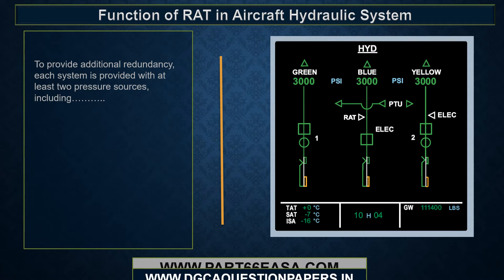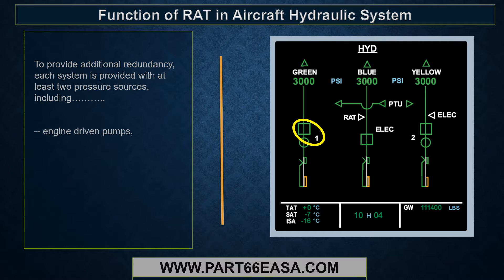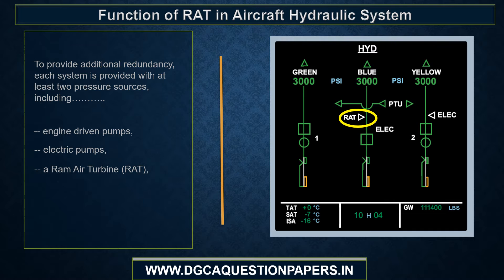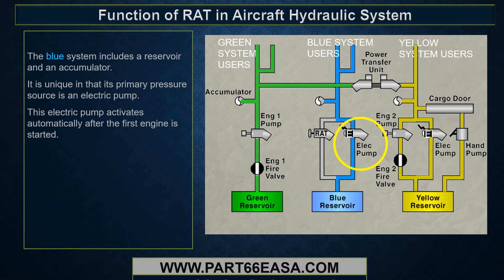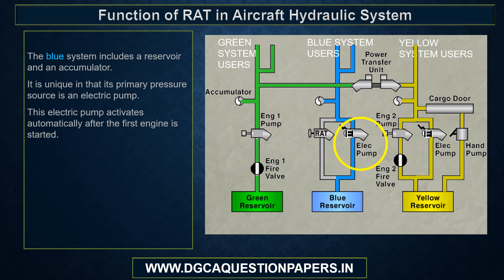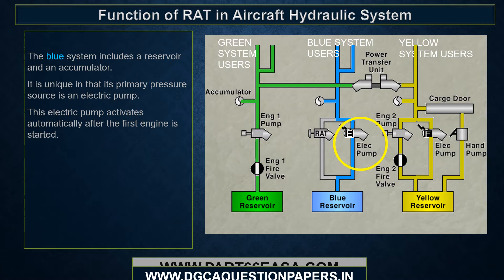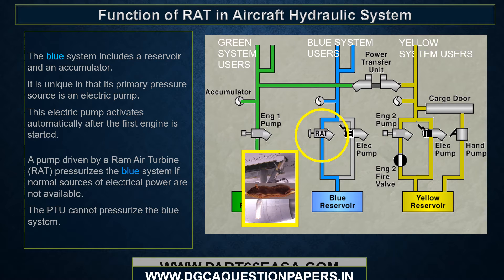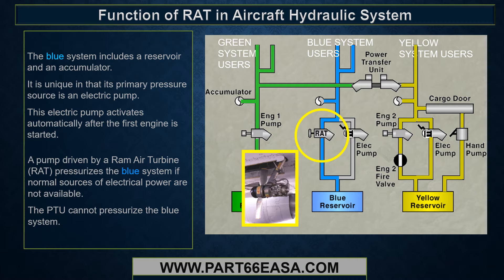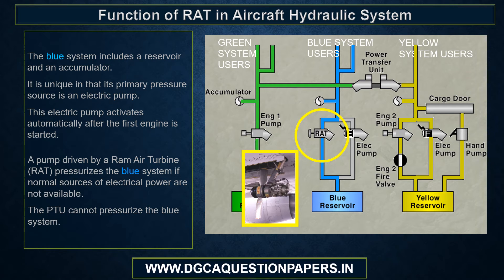To provide additional redundancy, each system is provided with at least two pressure sources, including engine driven pumps, electric pumps, a RAM air turbine (RAT), and a power transfer unit (PTU). The blue system includes a reservoir and an accumulator, and is unique in that its primary pressure source is an electric pump. This electric pump activates automatically after the first engine is started. A pump driven by the RAT pressurizes the blue system if normal sources of electrical power are not available. The PTU cannot pressurize the blue system.